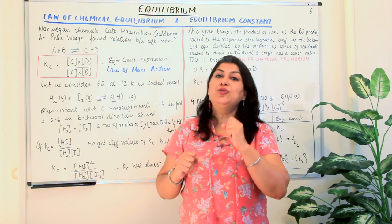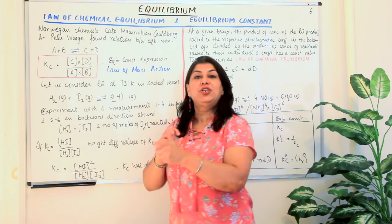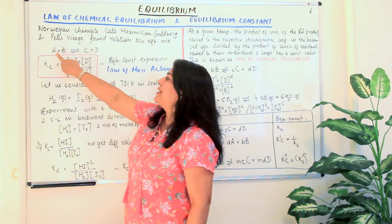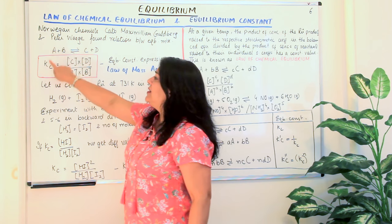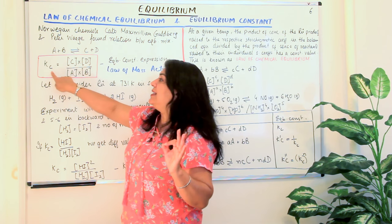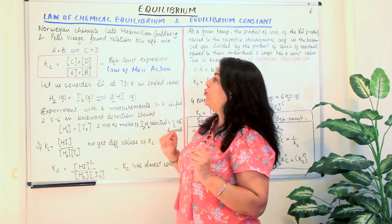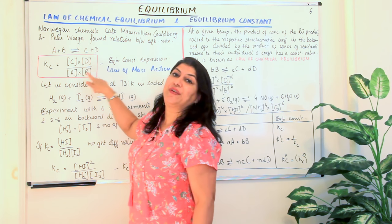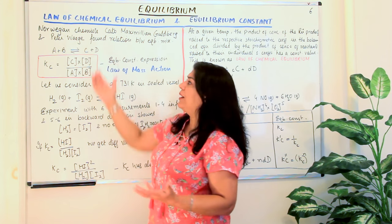This study was carried out by two Norwegian scientists: Cato Guldberg and Peter Waage. These two scientists found a relationship between the concentrations of the reactants and products. For the reaction A plus B gives C plus D — a reversible reaction at equilibrium — they defined an equilibrium constant in terms of concentrations, written as KC, where KC equals the product of the concentrations of the products divided by the product of the concentrations of the reactants.